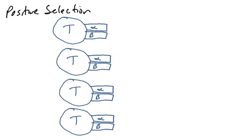After T cells, or thymocytes, undergo rearrangement of their alpha chain gene and the beta chain gene of the T cell receptor, T cells, if they've made it this far, they're double positive. They express both CD4 and CD8, and they express a T cell receptor. But at this point in the thymus, you have to test these T cells to see if they're of any use or good quality.